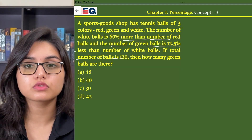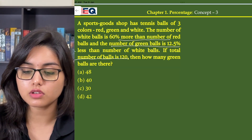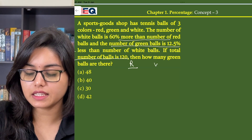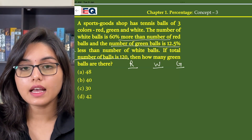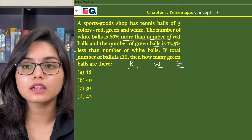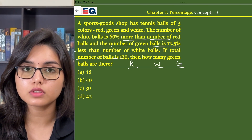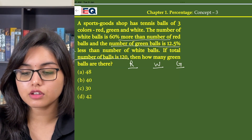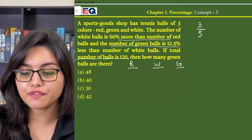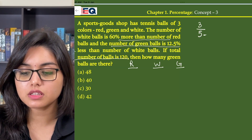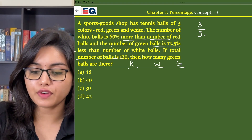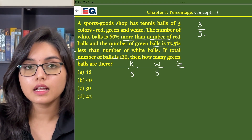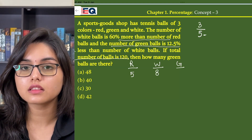In the given question, the sports goods shop has three colors of balls: red, white, and green. The number of white balls is 60 percent more than the red balls. 60 percent means 60/100 or 3/5, so if there are 5 red balls, the white balls will be 5 plus 3, which equals 8.